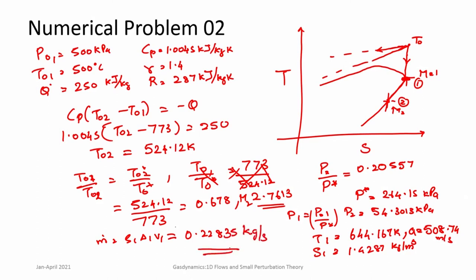This was a different kind of problem involving heat removal. The negative Q of 250 kJ/kg is taken out, so T02 reduces. We must be careful about the direction of heat transfer. Since T01 = T0*, T02/T01 directly becomes T02/T0* = 0.678, giving M2, from which all other values follow.